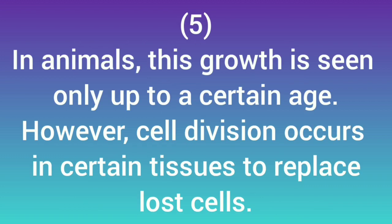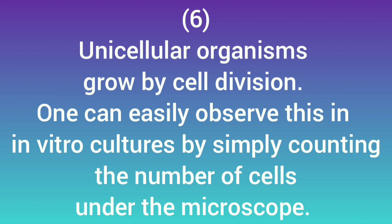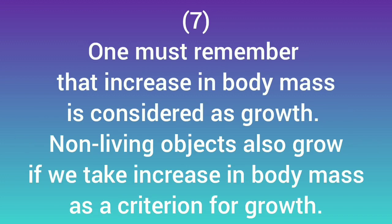In animals, this growth is seen only up to a certain age; however, cell division occurs in certain tissues to replace lost cells. Unicellular organisms grow by cell division. One can easily observe this in in vitro cultures by simply counting the number of cells under a microscope.